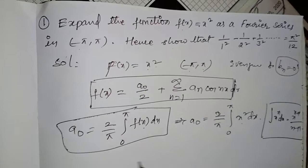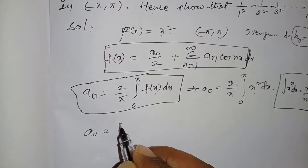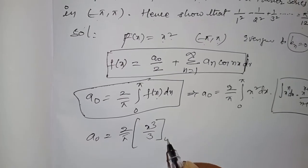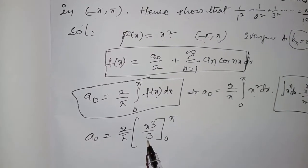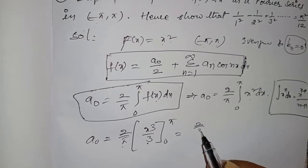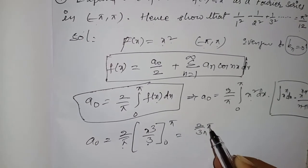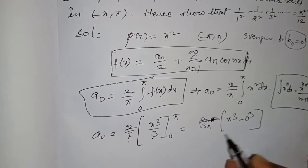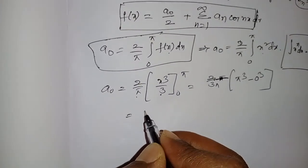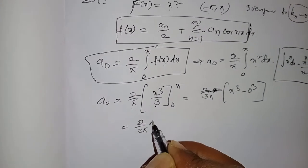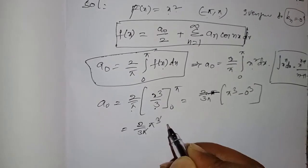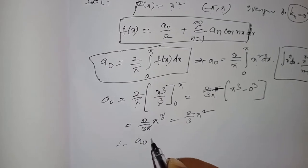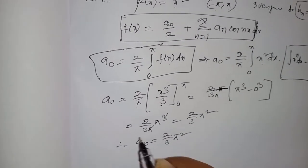Applying that formula: a0 = (2/π) · [x³/3] from 0 to π. Taking the 3 outside, that equals (2/3π) · (π³ - 0) = (2/3π) · π³. Cancelling π, the remaining is 2π²/3. Therefore, a0 = 2π²/3.